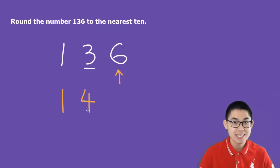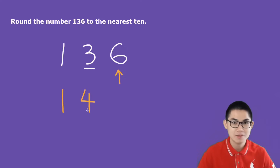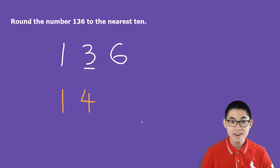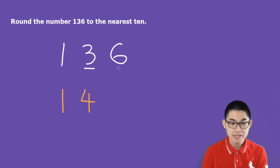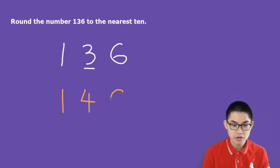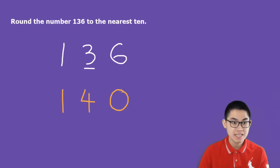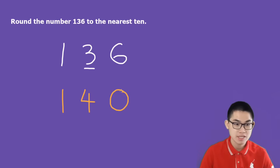So in this case, it is larger than 5, so 3 becomes number 4. And finally, all the numbers to the right of 3, we just turn them into zeros. So 6 becomes 0. And that's it — we just rounded 136 to the nearest ten.